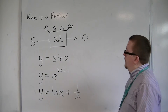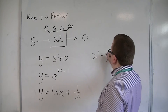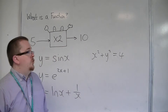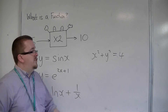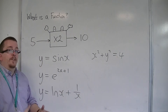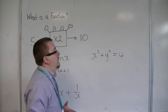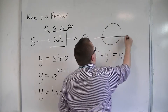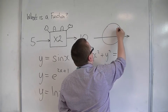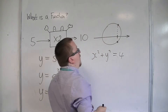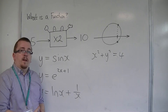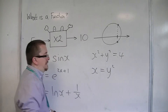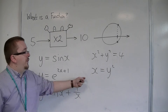However, x² + y² = 4, which is the equation of a circle, is not a function. Because if I put a value of x into this, I could potentially get two values of y. If you think about a circle and you choose a value of x, then potentially you could get two values of y. The same with an ellipse, or something like x = y², which is also not going to be a function.